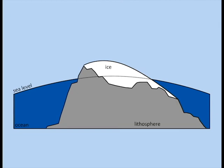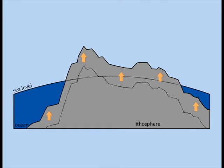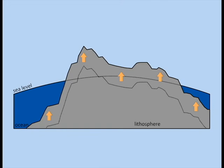Isostatic rebound happens when the buoyancy force is greater than the weight of the object, and therefore causes the object to rise. For example, when mountains erode or glaciers melt, the lithosphere actually rises to reach isostatic equilibrium. This process is very slow. In fact, uplift caused by the ending of the last glacial period is still continuing.